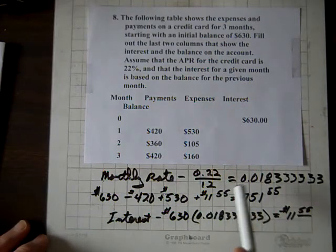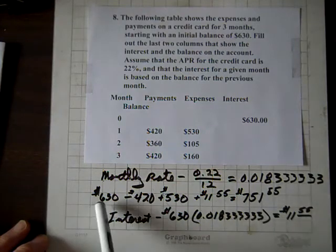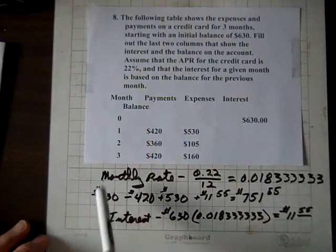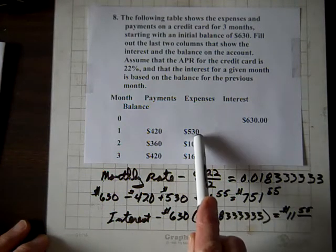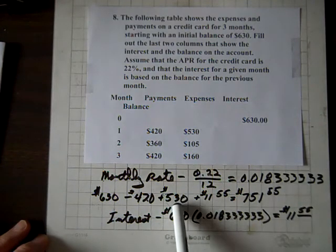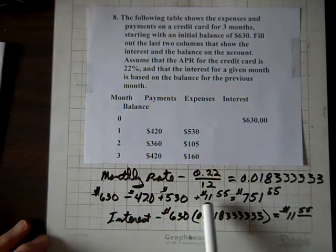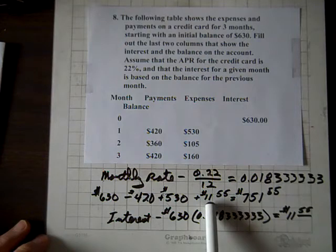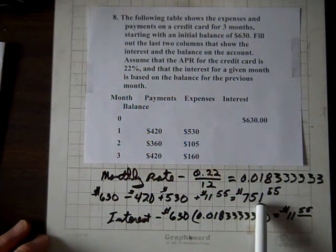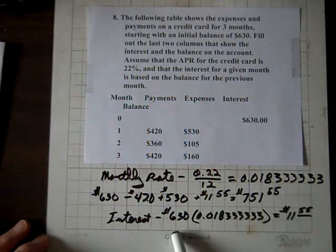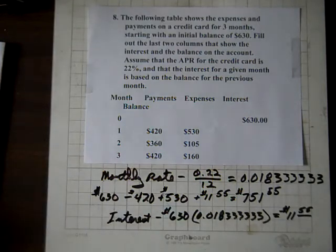And to compute the balance, then, you take the old balance, from it subtract the payment, $420. To it, add the $530 of new charges, expenses. Also, add the interest you owe for using that money. And your new balance becomes $751.55. So now let's repeat that,